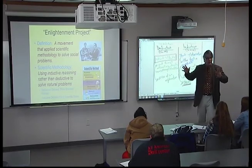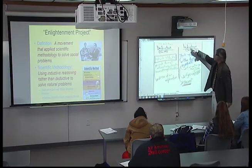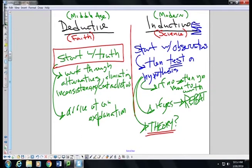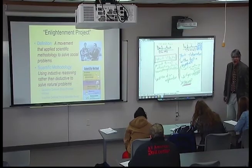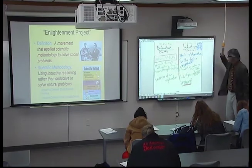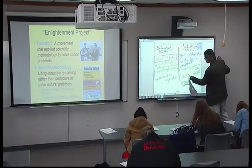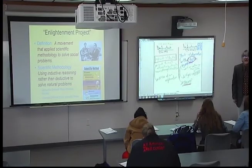Deductive reasoning — modern era, scientific method, natural world. And when I say natural world, I really mean the material world — things that you can touch and measure. Why is it critical that it's something that is tangible? How do you test an intangible?